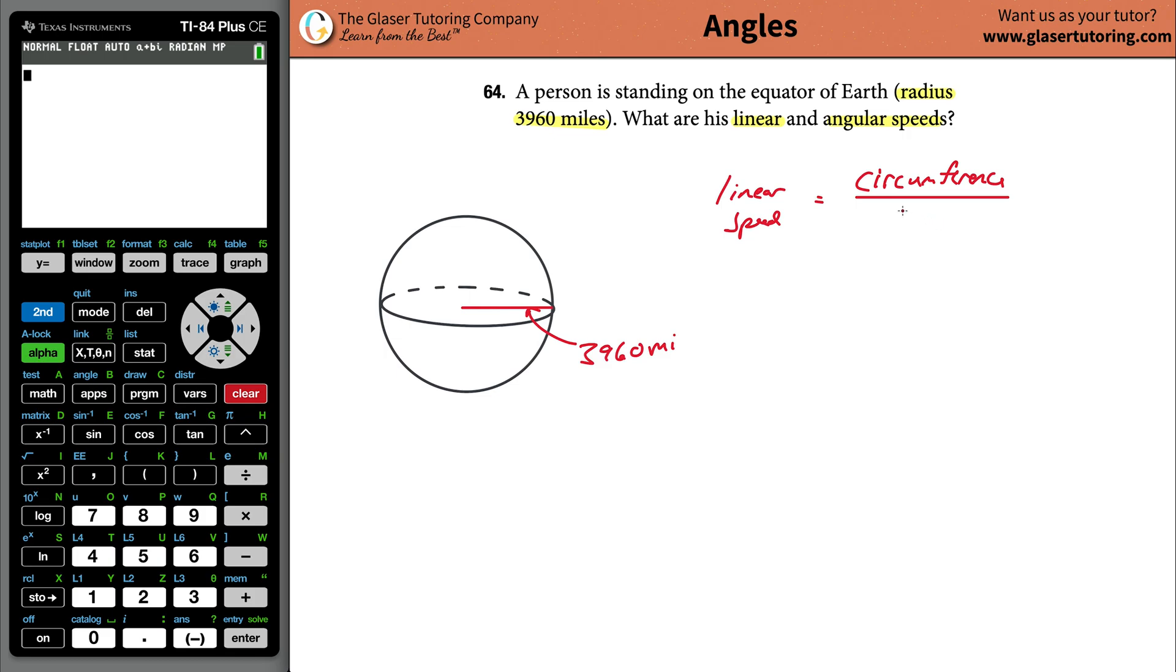So let's see, the linear speed here is going to be equal to the circumference. Now what's the formula for circumference? 2πr, or you could have done πd, right? Either one, but I'm going to use this one because they gave me the radius. And then I'm going to divide it by the time.